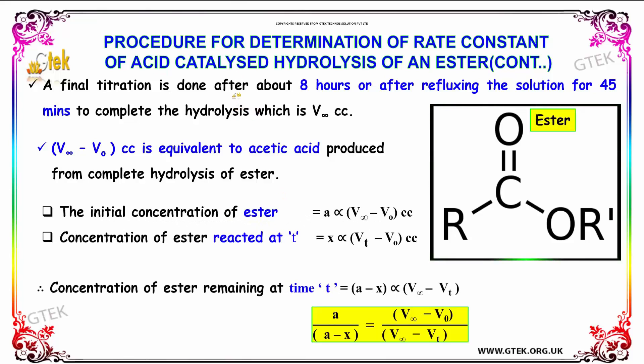A final titration is done after 8 hours or after refluxing the solution for 45 minutes to complete the hydrolysis, which is V∞ cc. So V∞ - V₀ cc is equivalent to acetic acid produced from complete hydrolysis of ester.